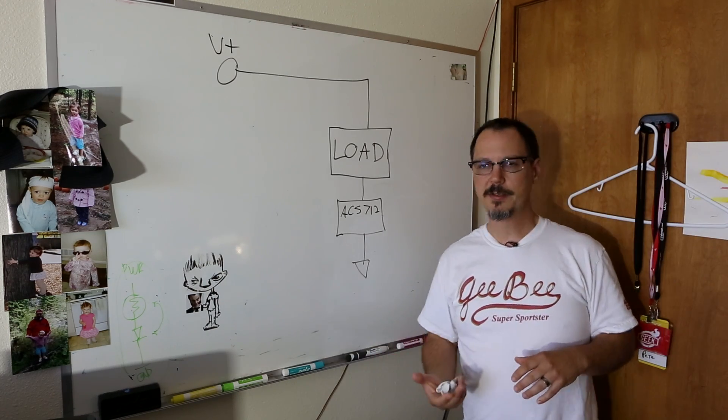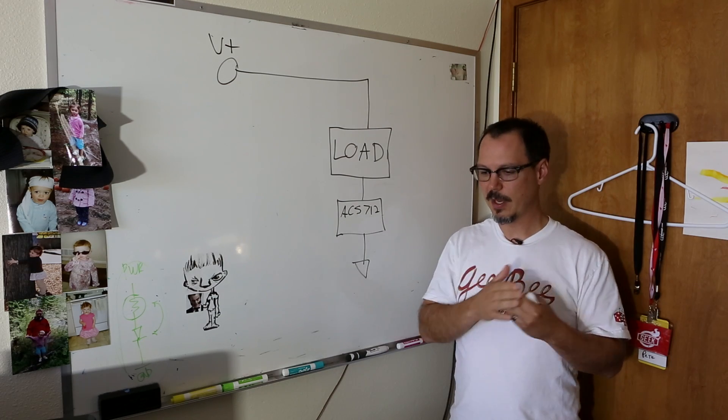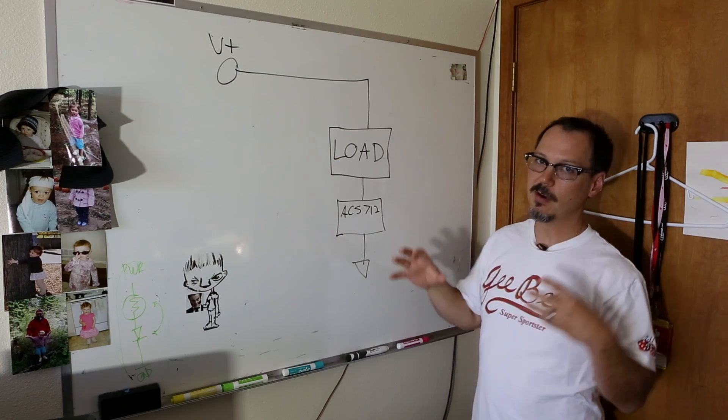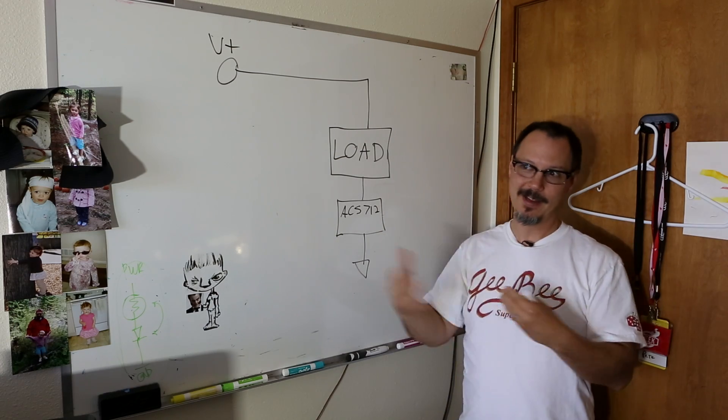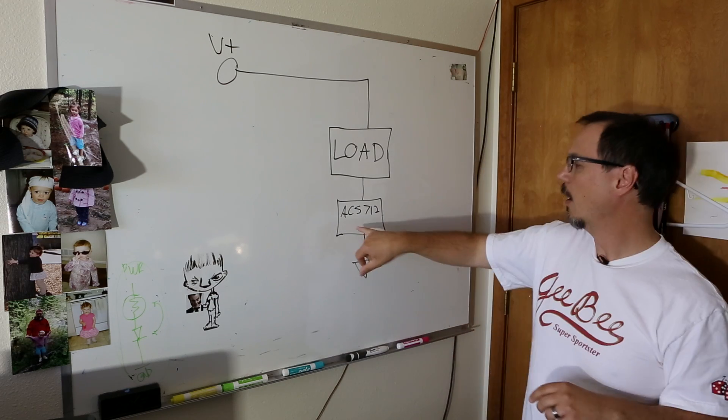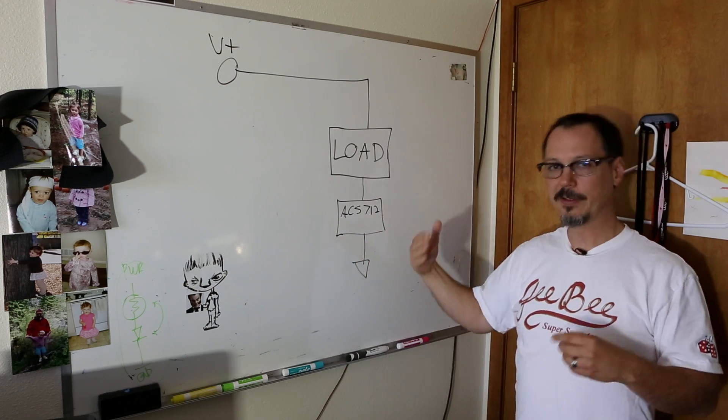The other method of doing this is by Hall Effect. Basically, any conductor that has a current going through it makes a magnetic field, right? And so we've got a sensor that can sense that and it'll tell you how much the magnetic field is doing and, you know, blah, blah, blah. We sell a part called the ACS-712 and it is a Hall Effect current sensor.